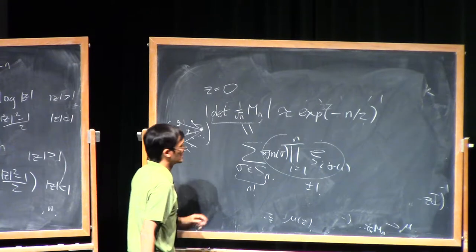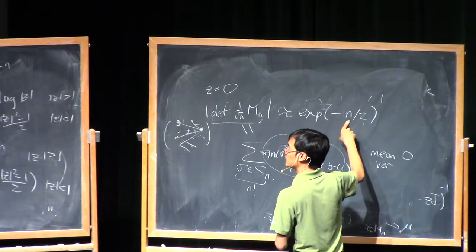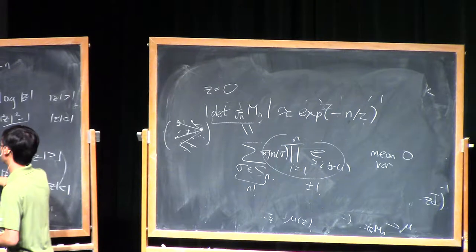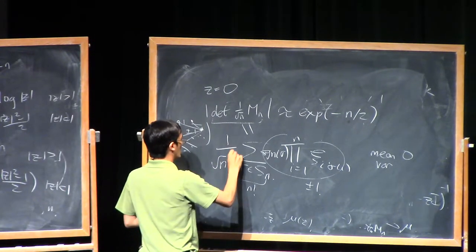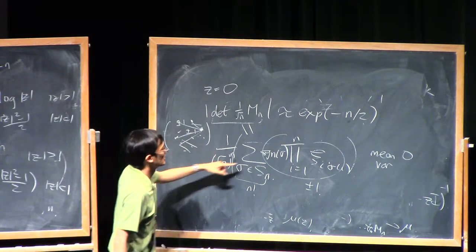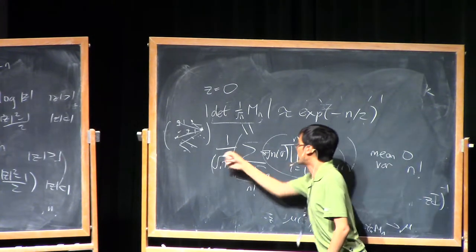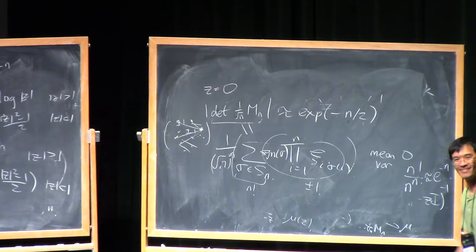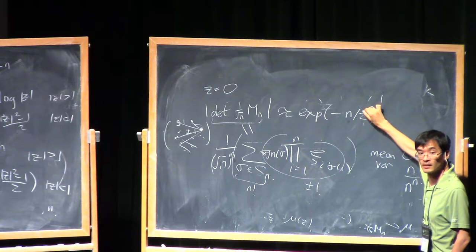Pairwise independence is still good enough to understand the mean and variance. This random variable has mean zero and variance n factorial — you're adding up n factorial pairwise independent plus-minus-one signs — but then you divide by n to the n due to the normalization. By Stirling's formula, n factorial over n to the n is about e to the minus n. So the standard deviation of this quantity is about e to the minus n over two, and that's why you should expect the e to the minus n over two expression in the determinant.